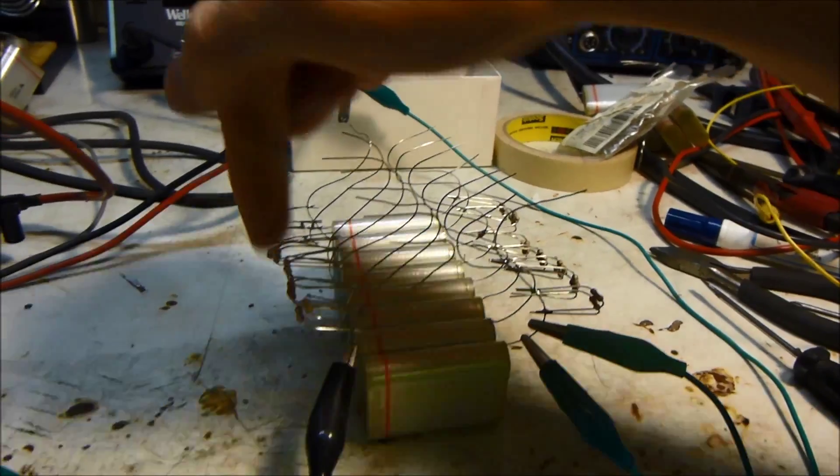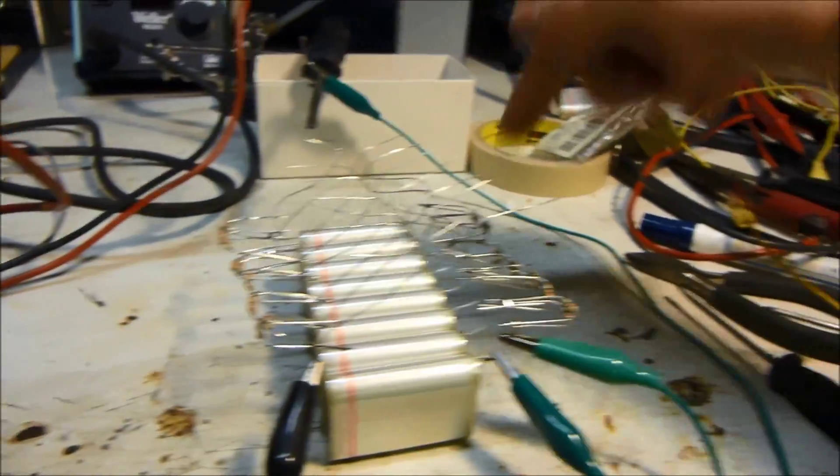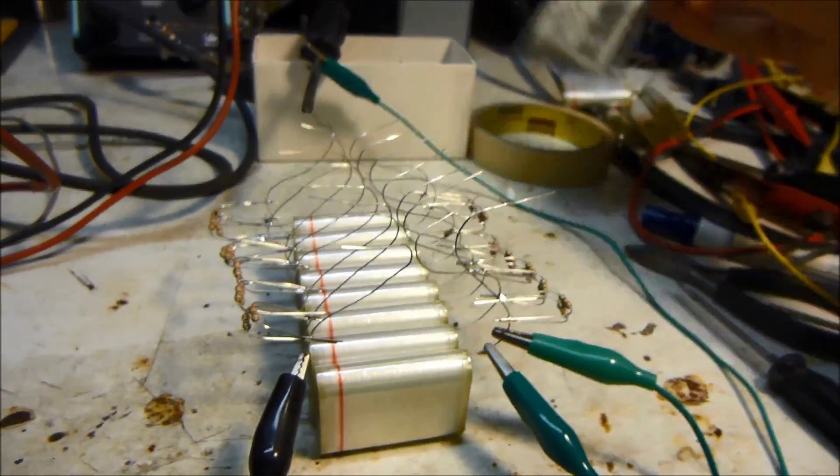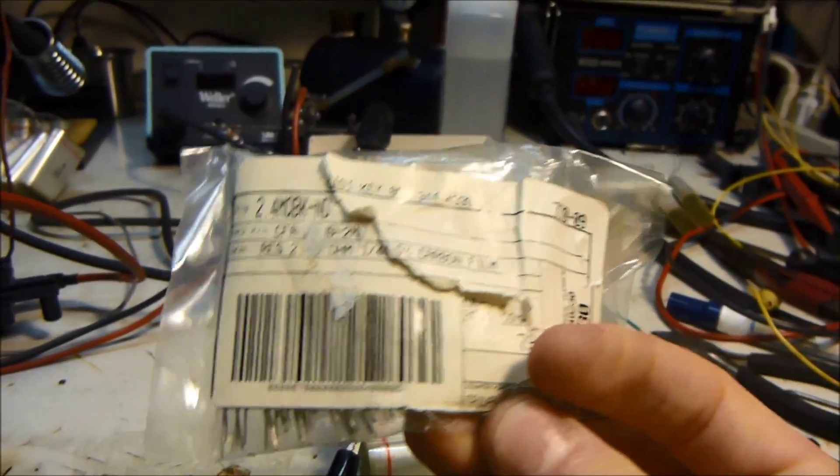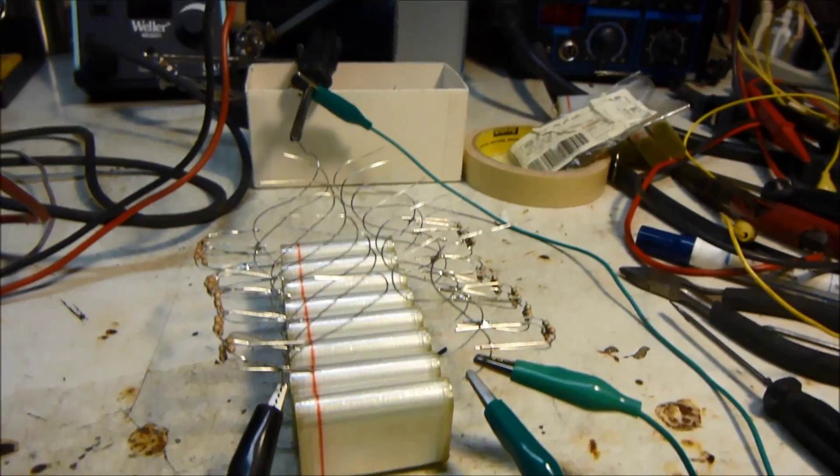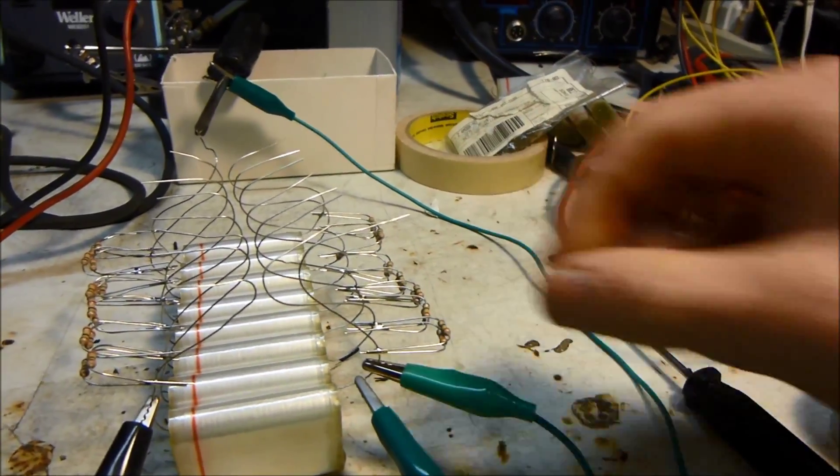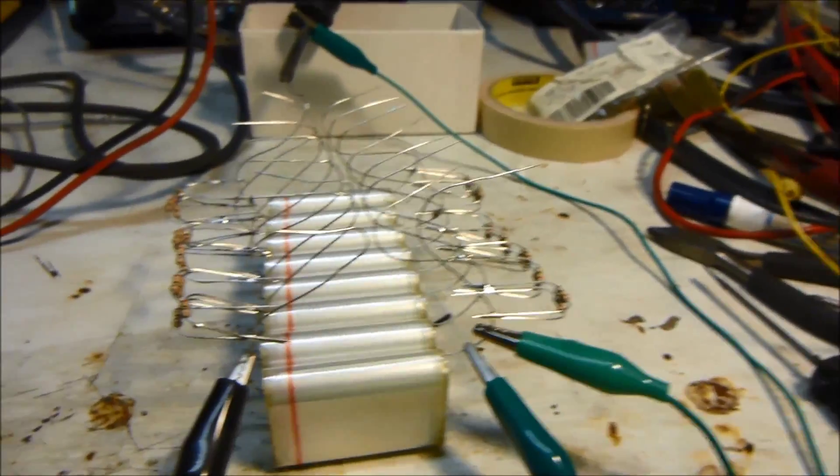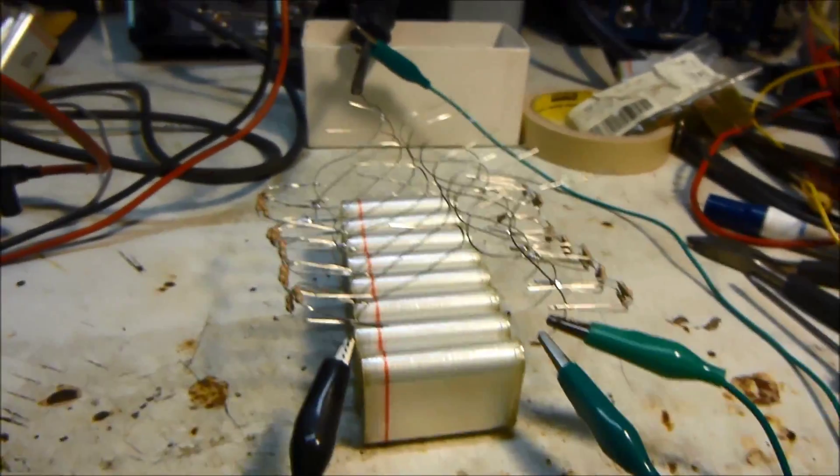These are all supposed to be one megaohm resistors on each side. I didn't have one megaohm, just was using what I had. These are 2.4 megaohm resistors so I have two connected in parallel the whole way up, so each one is about 1.2 megaohms, pretty close to what you're supposed to have.